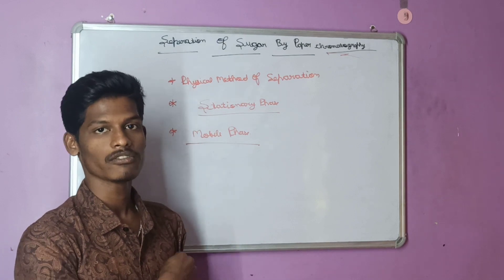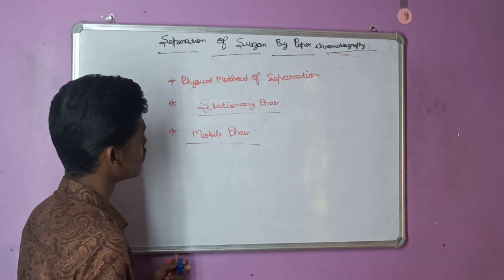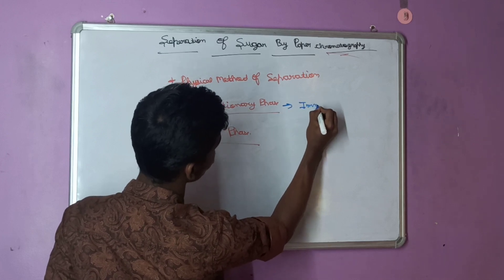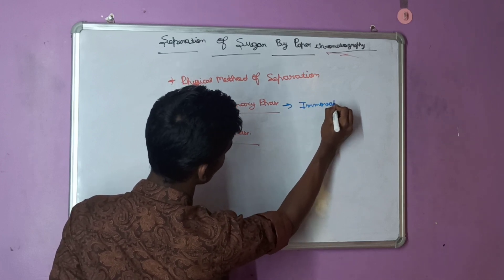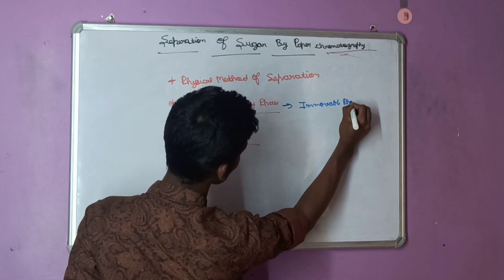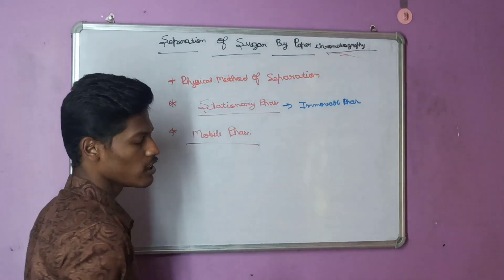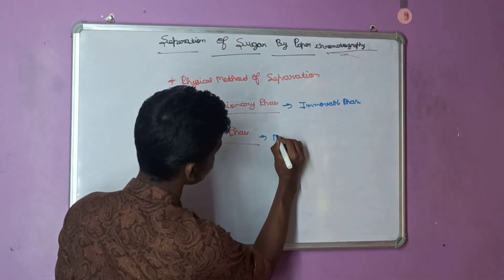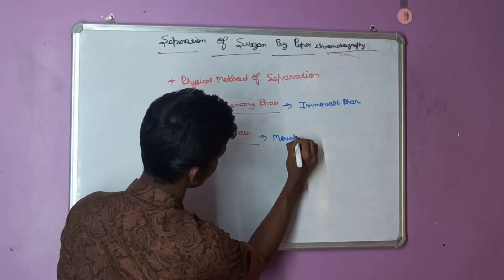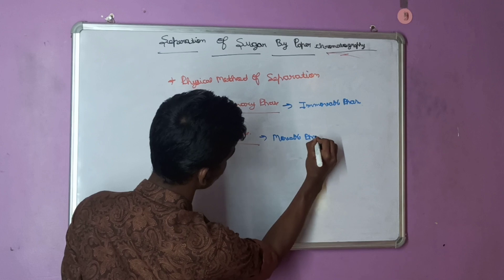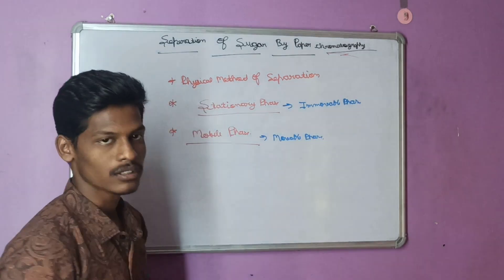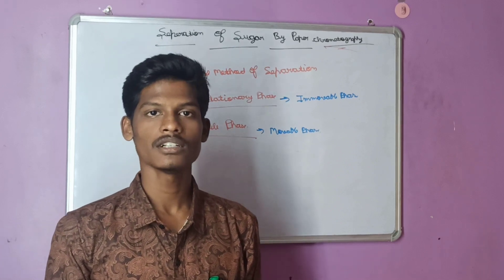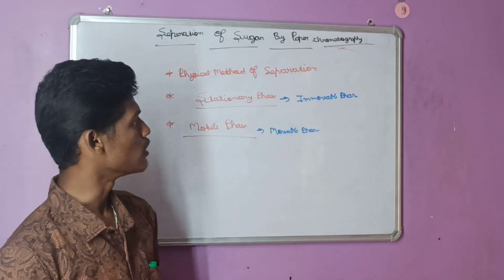What do stationary phase and mobile phase mean? Stationary phase — the name itself indicates that it is an immovable phase. Mobile phase — the components will move in this phase; mobile phase is a movable phase. The components will move in this phase.